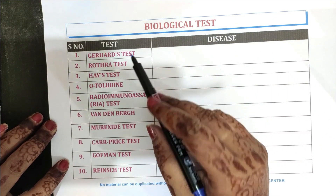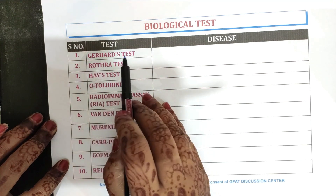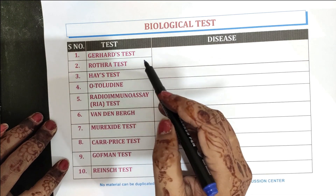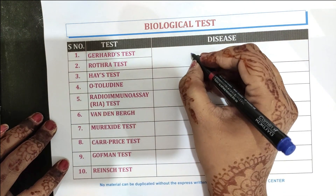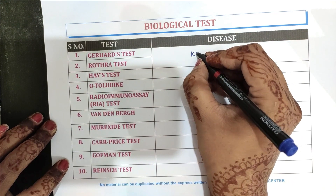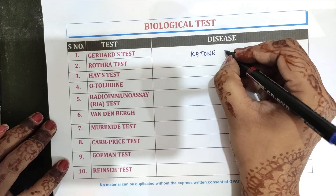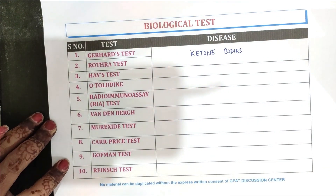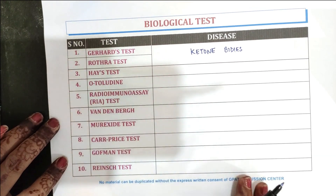I am going to start with the first one, that is Zerard's test, and also the Rothra test. These are both two tests done for the detection of ketone bodies. So ketone bodies can be estimated by these two tests: Zerard's test and the Rothra test.